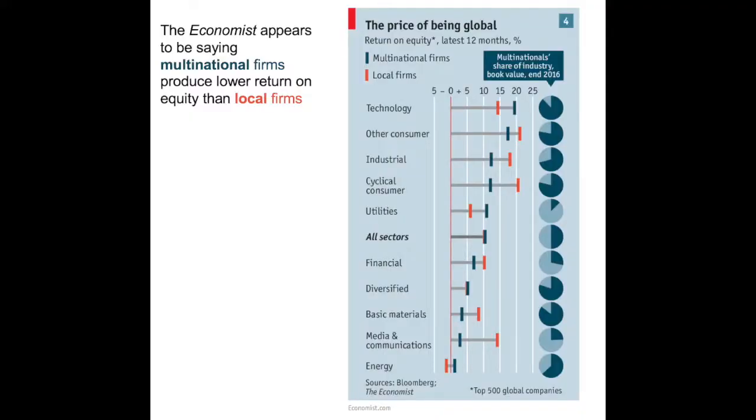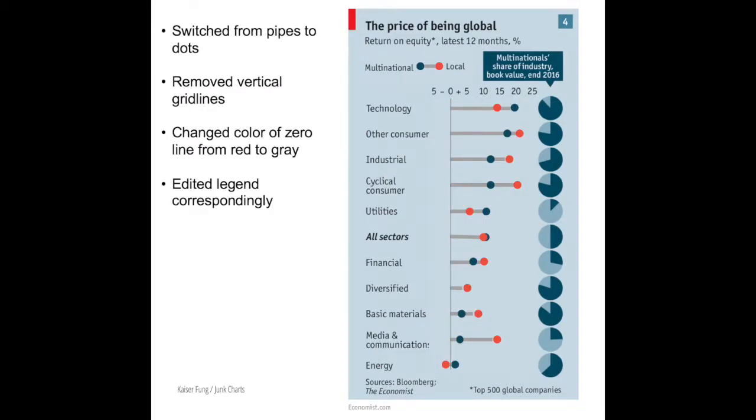Is this price affected by the relative importance of multinationals in the industry sector? I first switched the stripes into dots and removed the grid lines. I also changed the color of the zero reference line from bright red to a medium gray, pushing it into the background. The zero reference line is not very meaningful here, because the primary comparison we want readers to make is between the multinational firms and the local firms. We want eyes on the gap between the red and the blue dots.